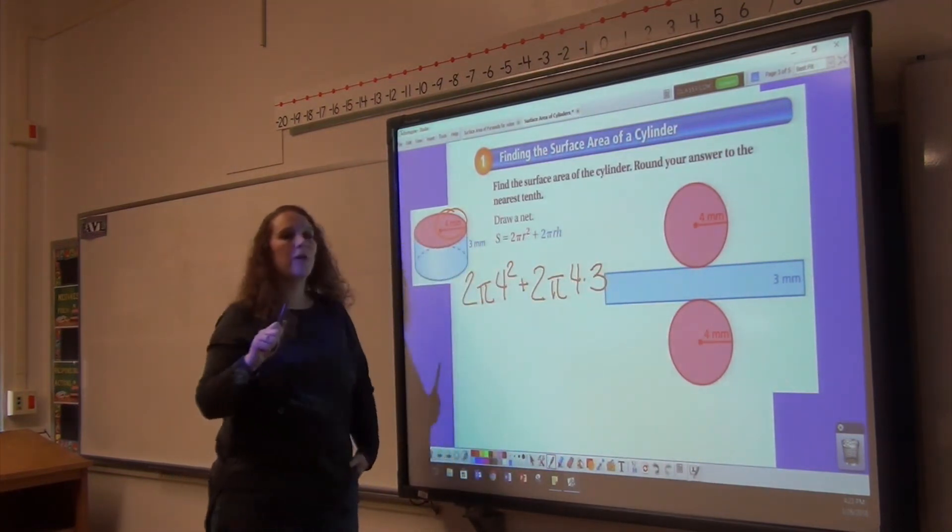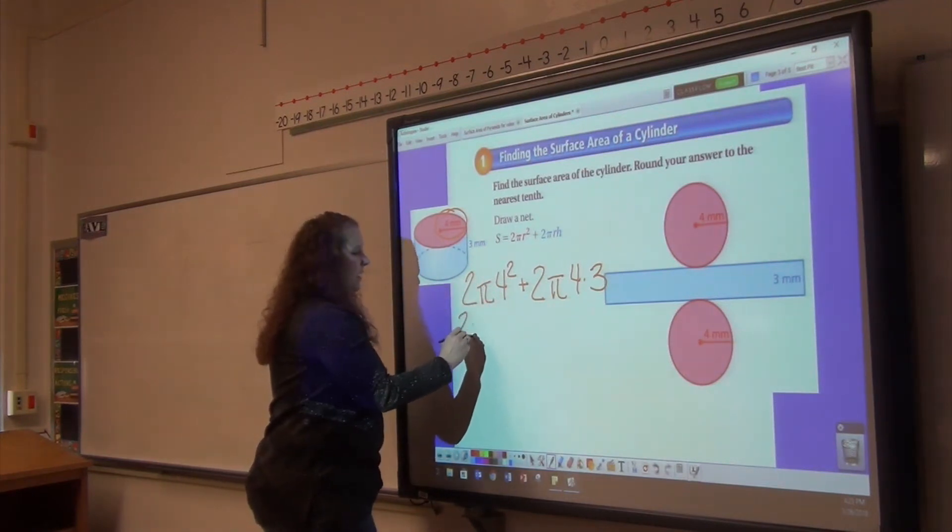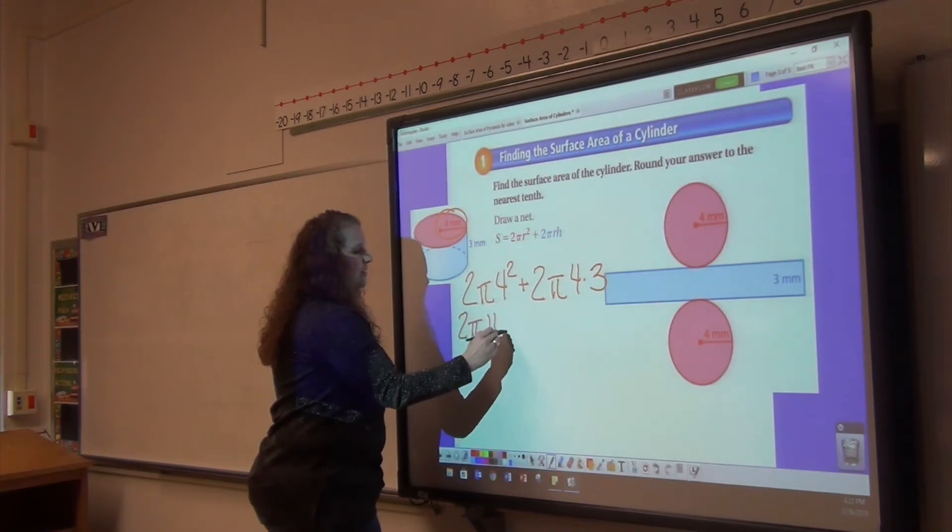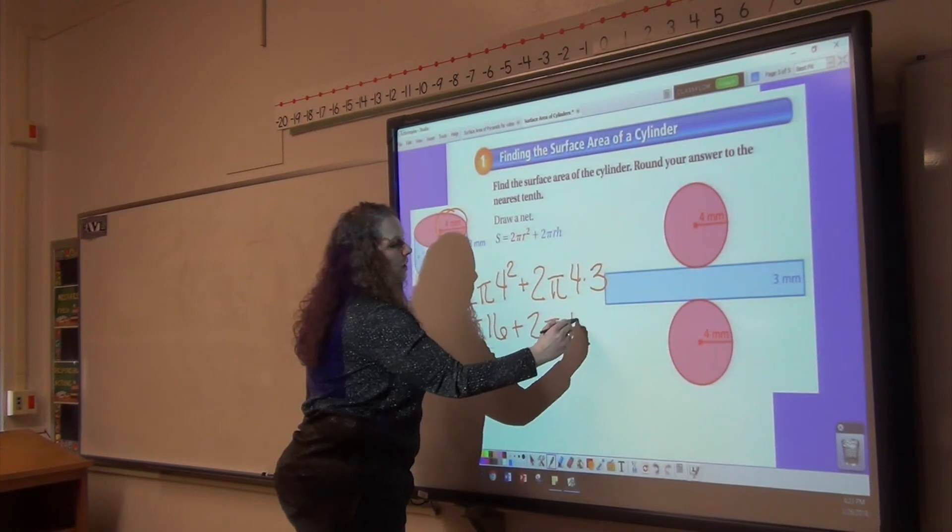All right. Make sure you're following your order of operations because you have to square before you can multiply. So we have 2π times 16 plus 2π, 4 times 3 is 12.